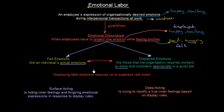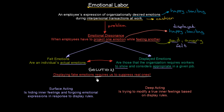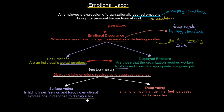What is the solution to this? A very important sentence to keep in mind: displaying fake emotions requires us to suppress real ones. There are two ways we can do that. The first one is called surface acting. Surface acting is hiding inner feelings and foregoing emotional expressions in response to display rules. Simply, when you are sad and angry, you are still going to display that you are happy and smiling, even though inside you are feeling differently and not that good.